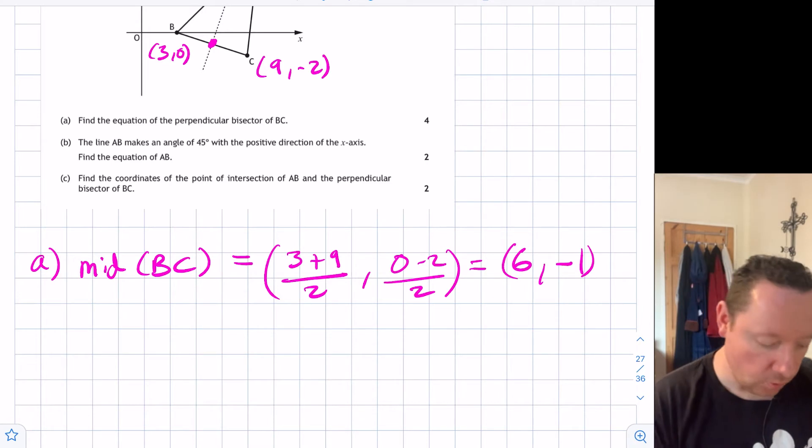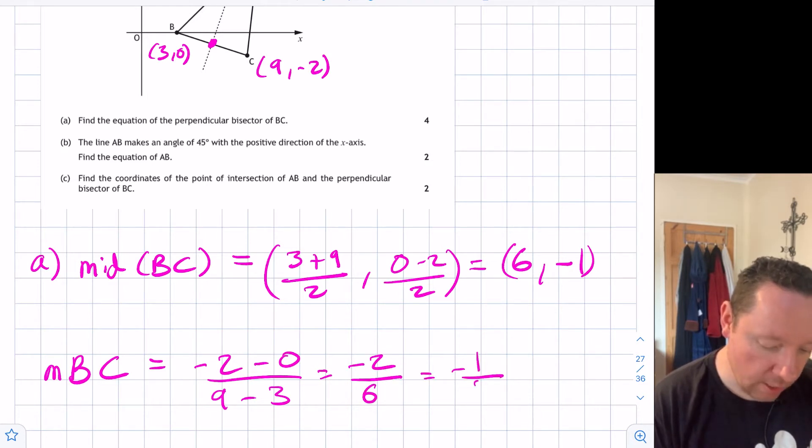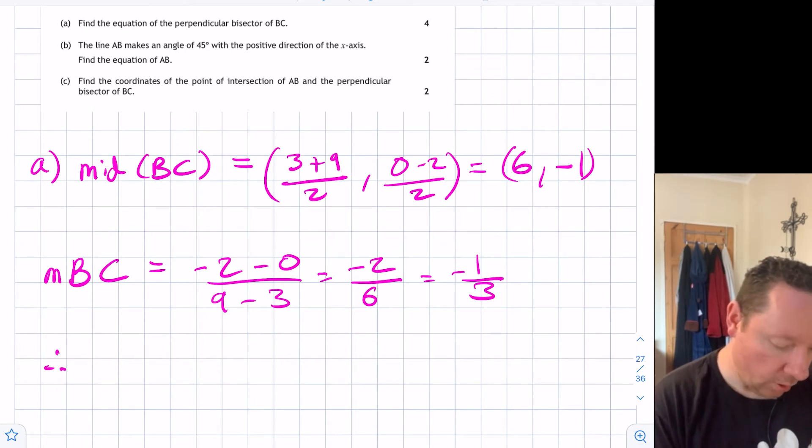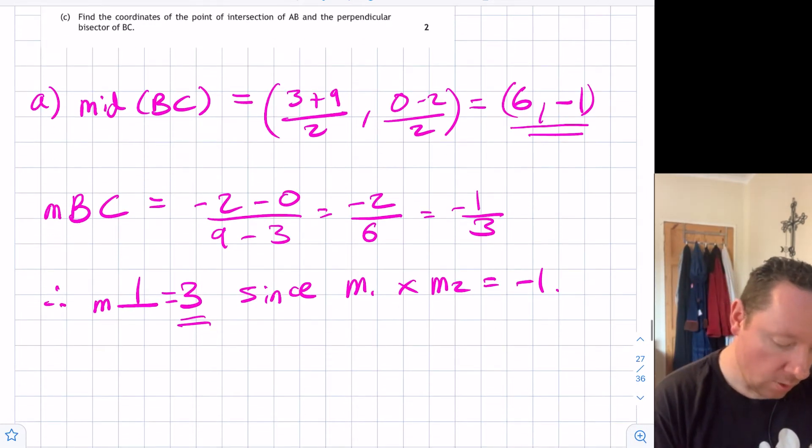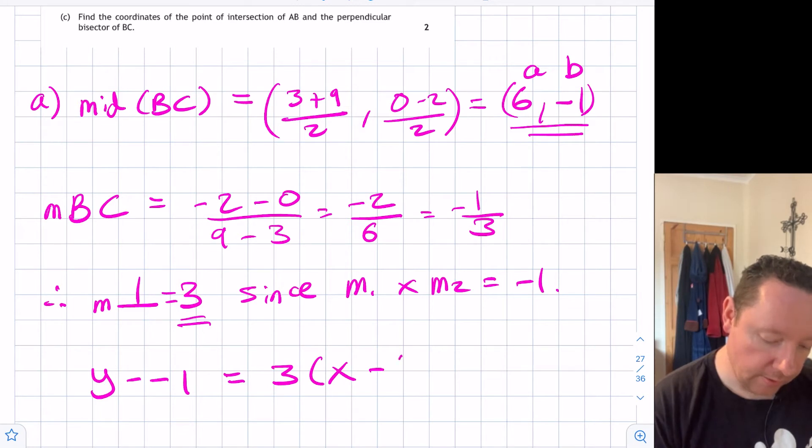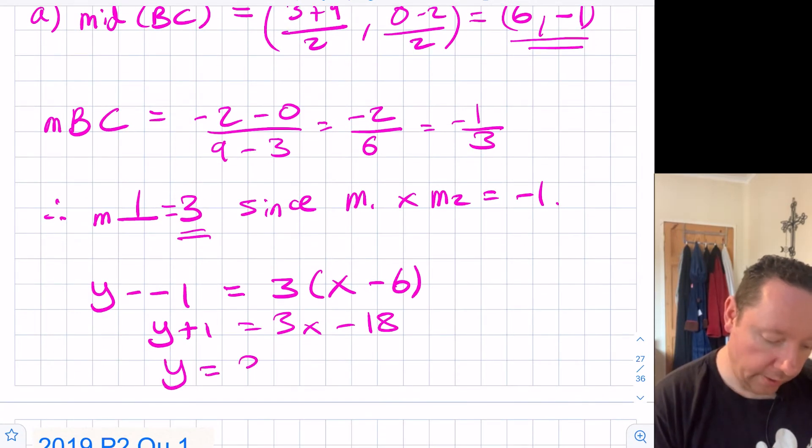We need the gradient. The gradient of BC equals -2 take away 0 on top, and 9 take away 3 on bottom. That's -2 over 6, which is -1/3. Therefore the gradient of our perpendicular is 3, since m1 times m2 equals -1. We've now got both things: our gradient is 3 and we've got our point. Using y minus b equals mx minus a, y minus -1 equals 3 times x minus 6. So y plus 1 equals 3x minus 18. Therefore y equals 3x minus 19. Part A done.